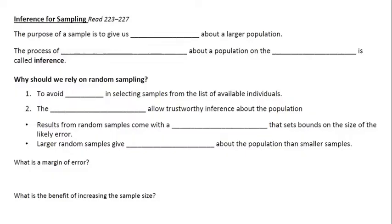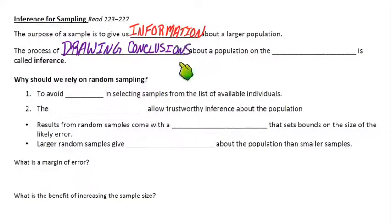The reason we do that activity is so we can talk about inference for sampling. The whole reason we sample is to gain information about the population, but we don't have time to do a census of everyone, so we just do a sample, and that's going to give us some information about the population. That involves the process of drawing conclusions, making an inference, that means you draw conclusions about a population on the basis of your sample data.